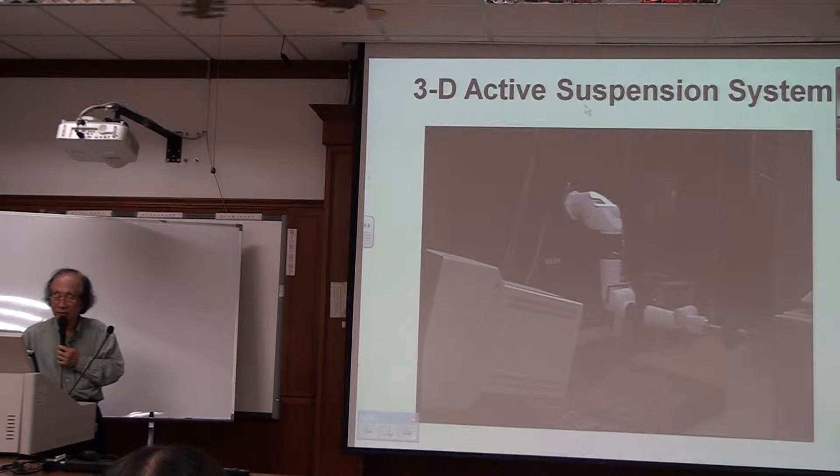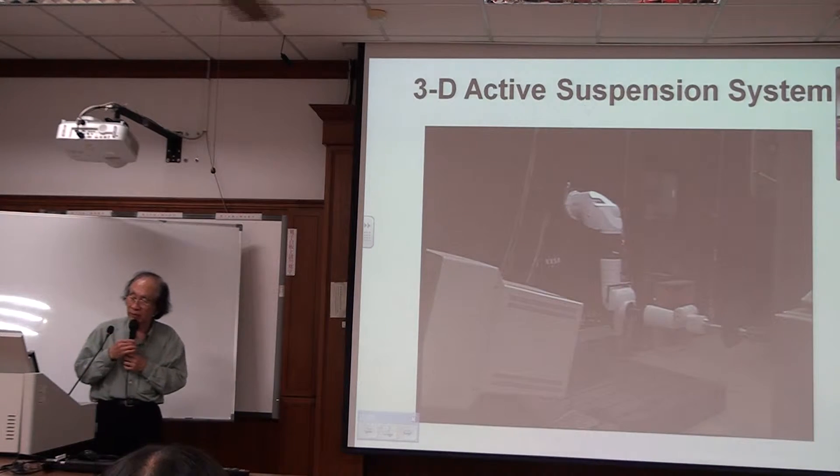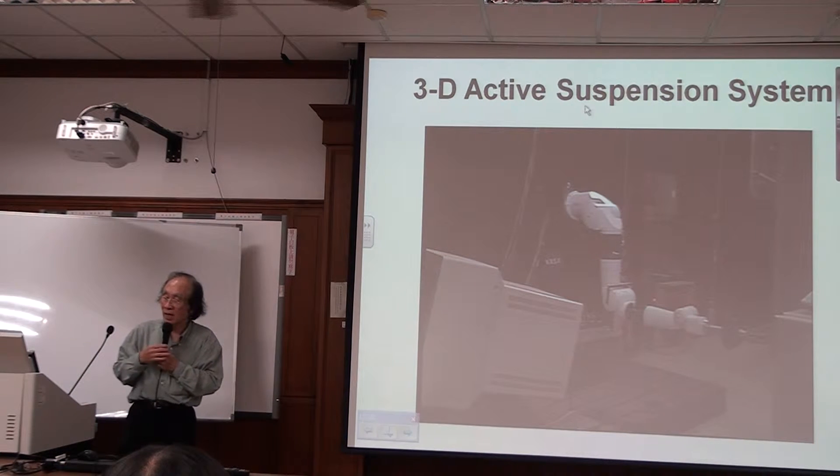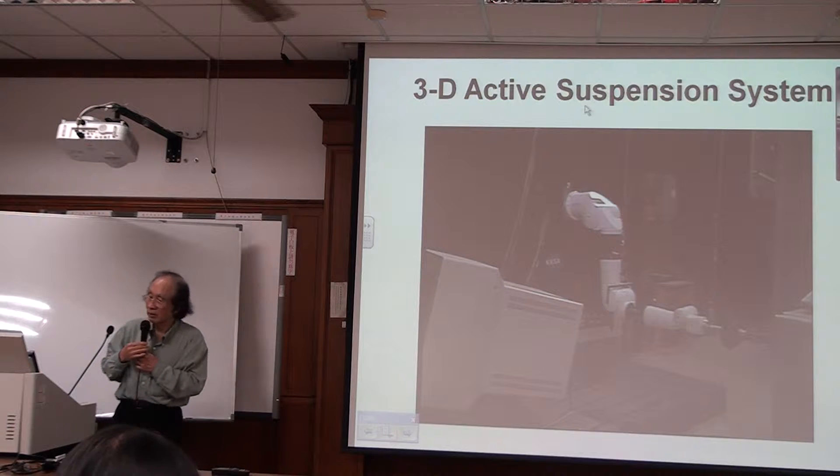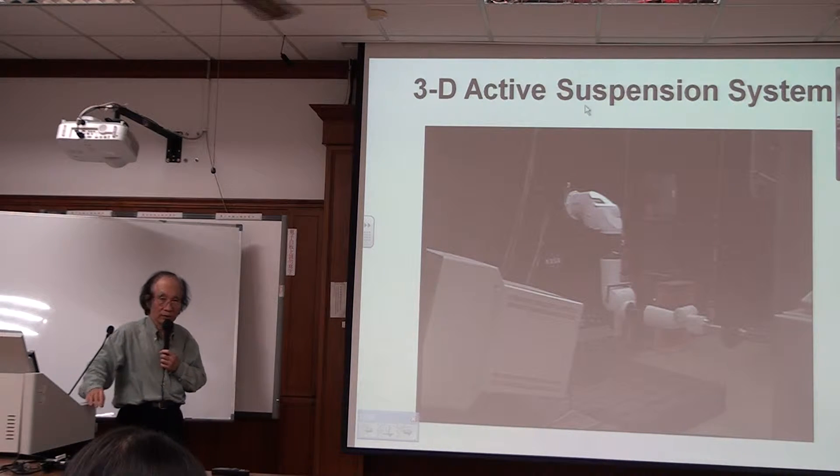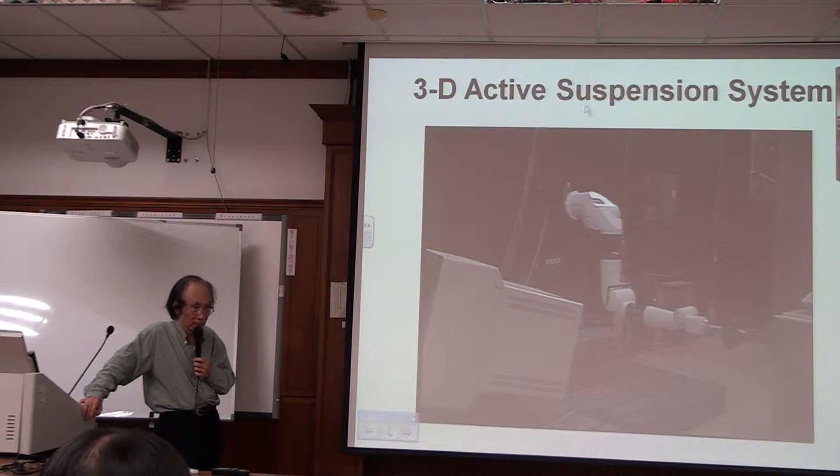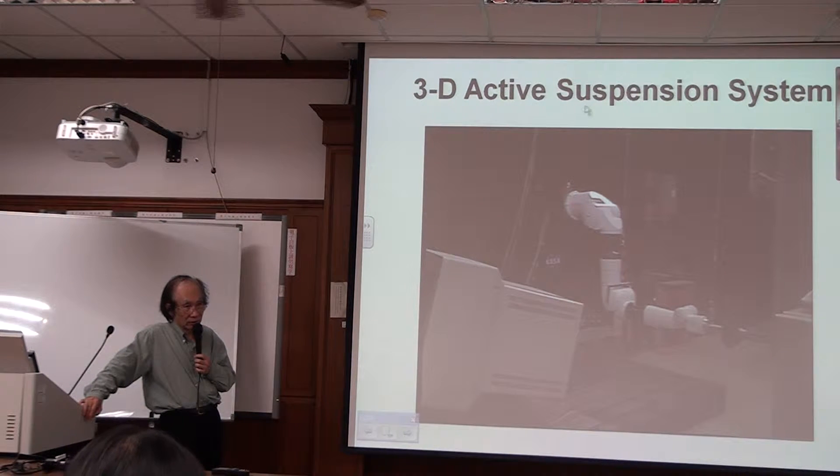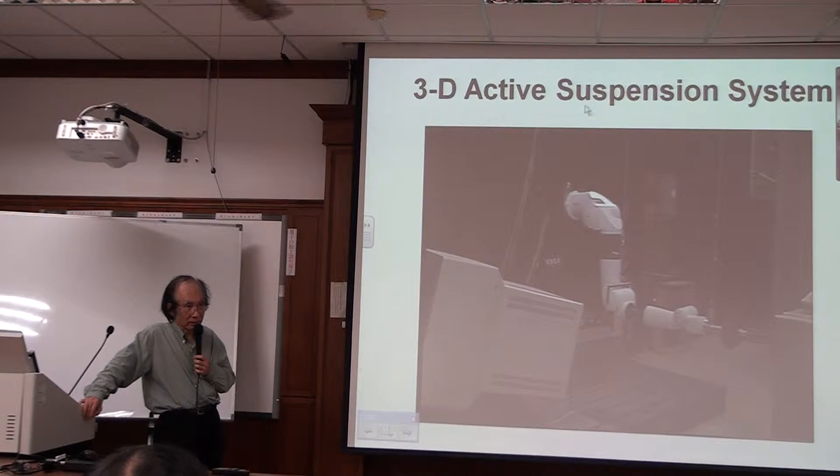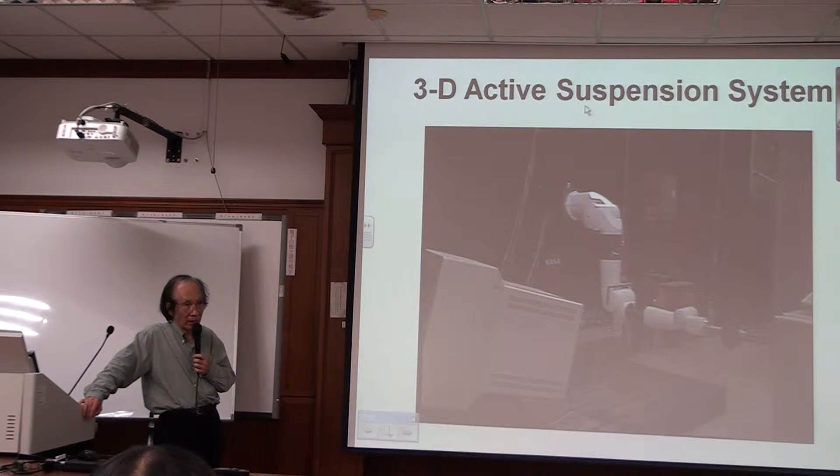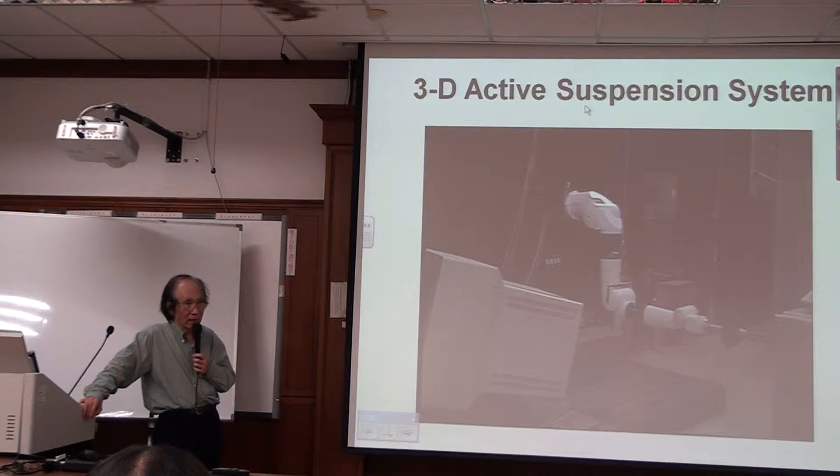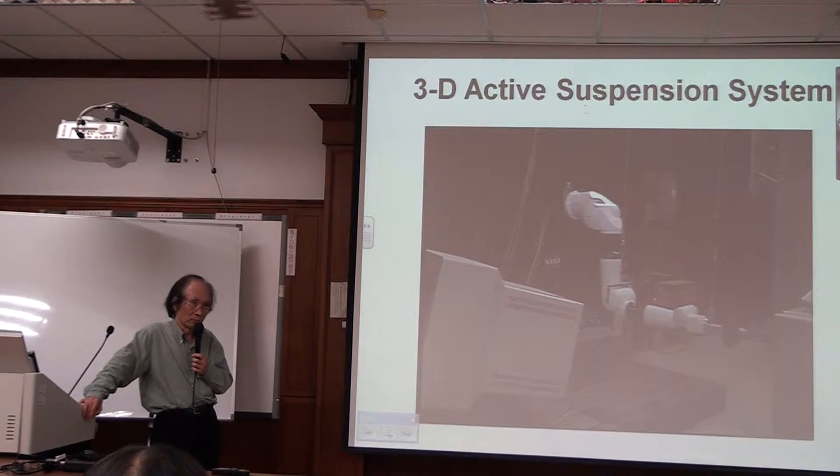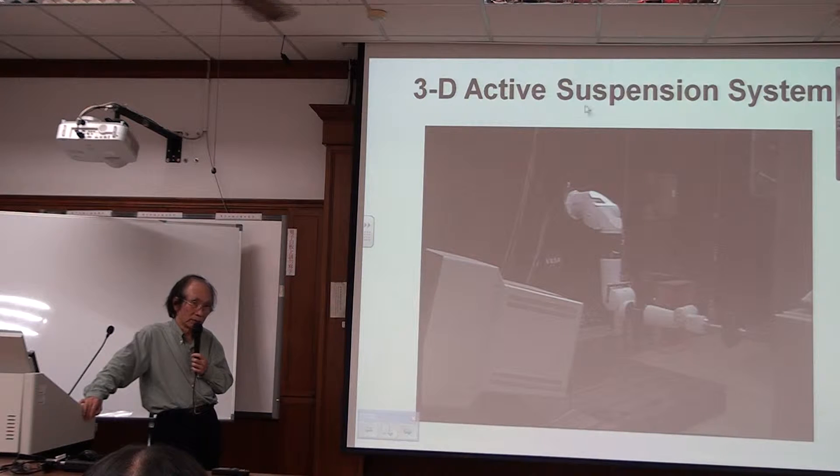So I don't think we need to explain too much for this. And this is another design we call 3D active suspension system. Because in space, if you have a robot, how can you perform control experiments? How can you maneuver a robot arm on ground but simulate the robot arm moving in space?